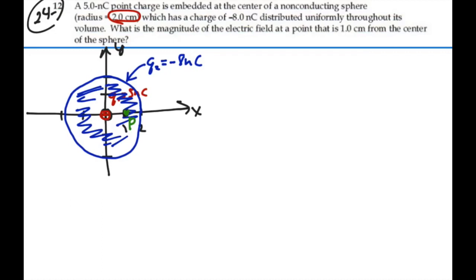We actually have a way to simplify this problem. From the distribution of charge, only the charge within the radius of the point we're considering contributes to the electric field at that point. If we create a Gaussian surface of radius 1 centimeter — which includes point P on its surface — then all the charge outside that surface will create flux that goes in and comes back out, making it external charge that does not contribute to the electric field at that point.